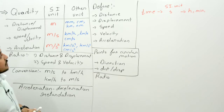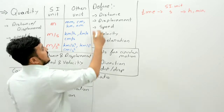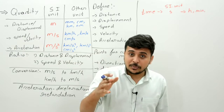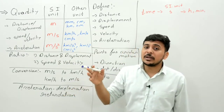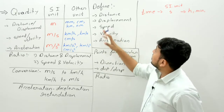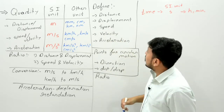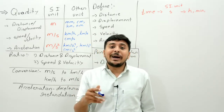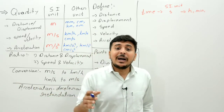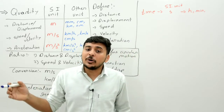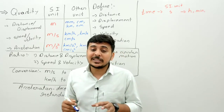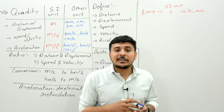So now, another thing after that is definitions. Write these down as they will be important for tests. Define distance: the total path length traveled by any object is known as the distance traveled by that object.